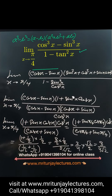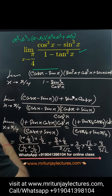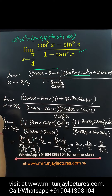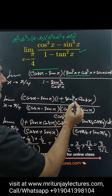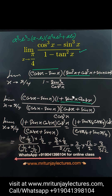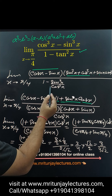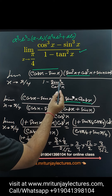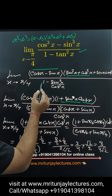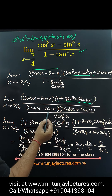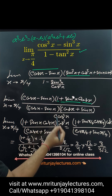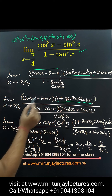Dividing by tan²x, which is basically sin²x upon cos²x, and that value is 1. So the numerator is written as 1 plus sin x into cos x. In the denominator, taking LCM gives cos²x minus sin²x upon cos²x, which is written as cos x minus sin x into cos x plus sin x divided by cos²x.